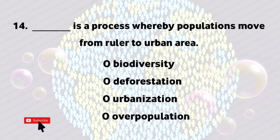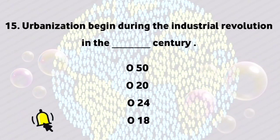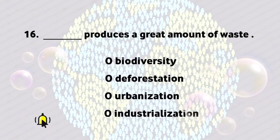Urbanization is a process whereby populations move from rural to urban area. Urbanization began during the Industrial Revolution in the 18th century. Industrialization produces a great amount of waste.